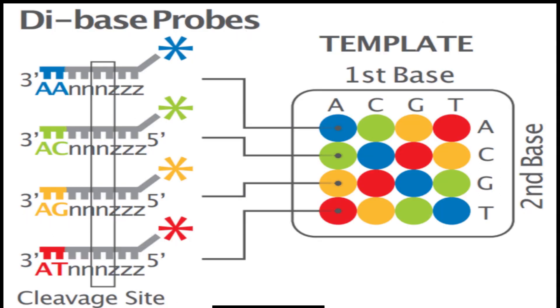Primers hybridize to a sequence adapter at the library template. Each base is queried by two labeled oligonucleotides, which have one of 16 specific dinucleotides. They use two-base encoding to decode platform data. Each base pair of the probe is one of four possible colors.